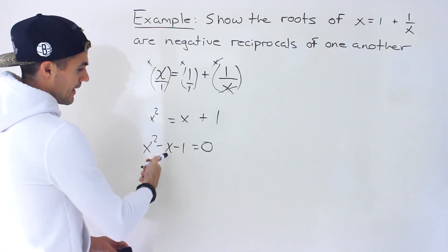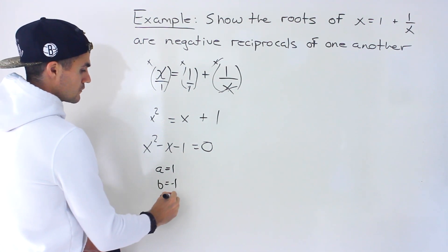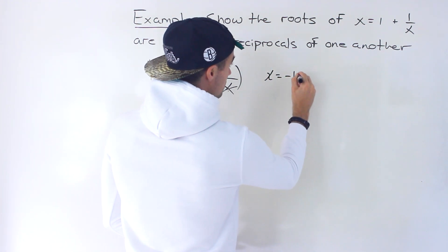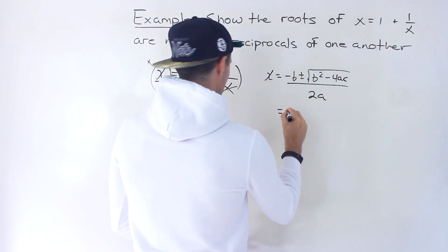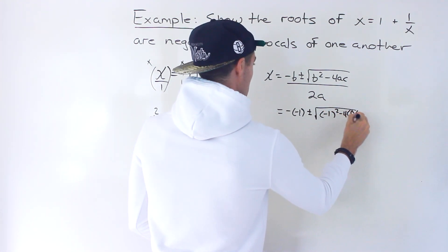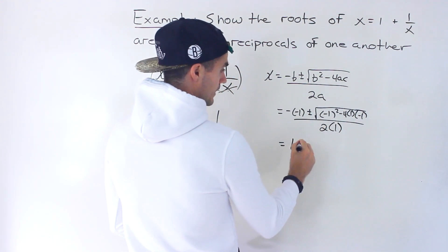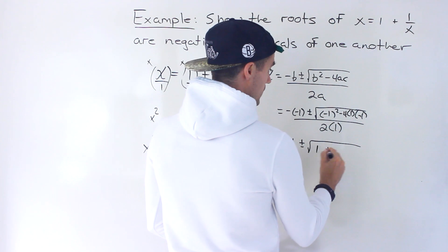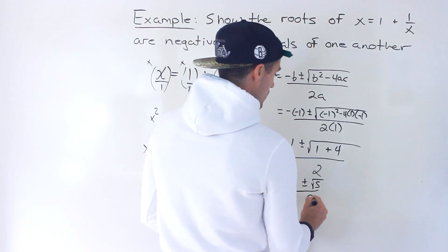In this particular case we can't factor it, so we grab a equals 1, b equals negative 1, and c equals negative 1, and put them into the quadratic formula: x equals negative b plus or minus the square root of b squared minus 4ac, all over 2a. So we get negative negative 1 plus or minus the square root of negative 1 squared minus 4 times 1 times negative 1, all over 2. That gives us 1 plus or minus the square root of 1 plus 4, over 2, so 1 plus or minus root 5 over 2.